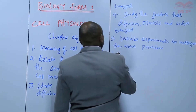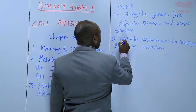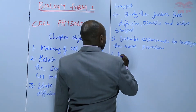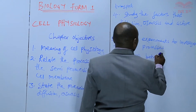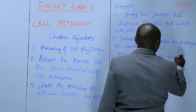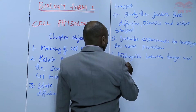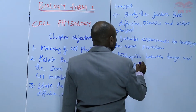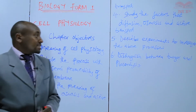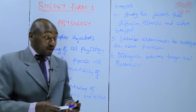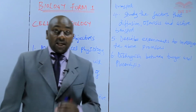And finally, objective number six: we should be able to distinguish between turgidity and plasmolysis. Those are two terms that we'll also be learning in the course of the topic, and we should be able to distinguish them. So those are the objectives we shall be fulfilling in the study of Cell Physiology.